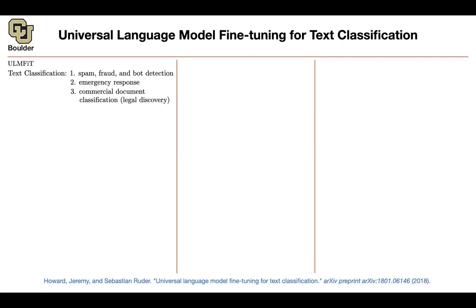What are the applications of text classification? You can do spam — is this email spam or not spam? Is this comment on LinkedIn or another social media platform a fraud? What is being posted on Facebook — is that a bot or a real person? You can have emergency response. These are the sorts of question-answering type tasks. Another application could be legal discovery, where there is some commercial document and you want to classify them.